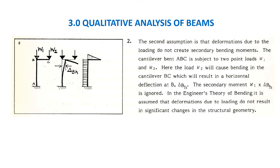The vertical member cannot change its length, so the length AB remains the same and it moves only horizontally. When w2 pushes it down, point C will have both vertical and horizontal deflection, while point B will have only horizontal deflection. The member maintains a 90-degree angle, forming a single curvature going upward from one end and a single curvature continuing to the other end.